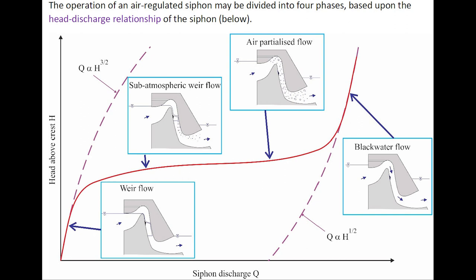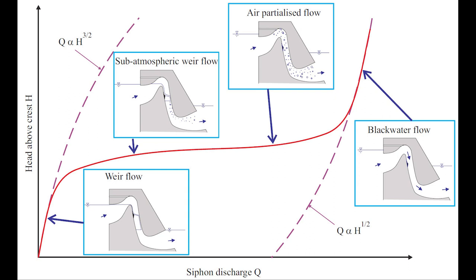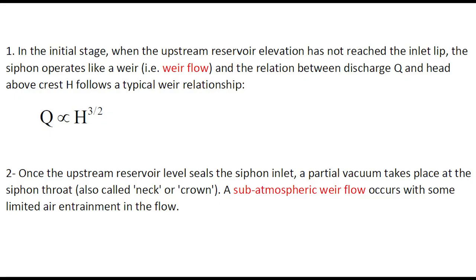The operation of an air-regulated siphon may be divided into four phases, based upon the head-discharge relationship of the siphon, with the head above crest, H, on the vertical axis, and the siphon discharge, Q, on the horizontal axis.